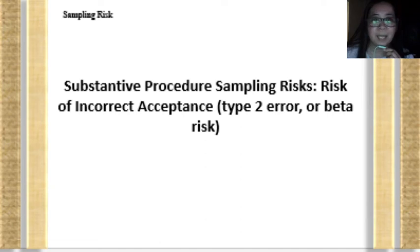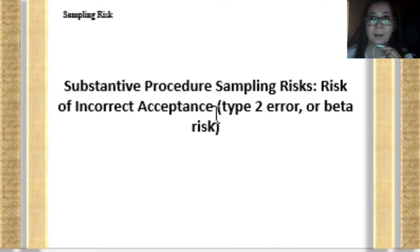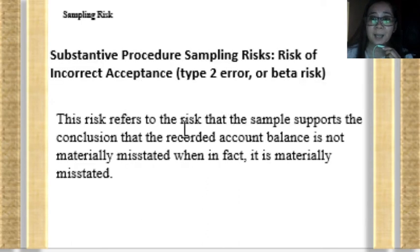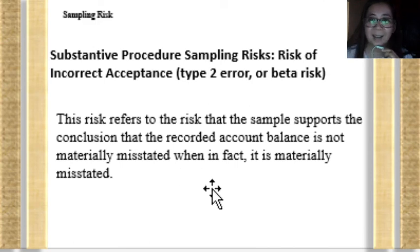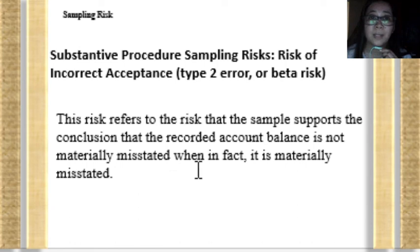The second type of sampling risk for substantive procedures is the risk of incorrect acceptance — considered to be type 2 error or beta risk. This is the same as the risk under the test of internal control. This type of sampling risk is heavier on the part of the auditor. This risk refers to the risk that the sample supports the conclusion that the recorded account balance is not materially misstated when, in fact, it is materially misstated. That is why it will result in audit risk, making it a heavier risk.